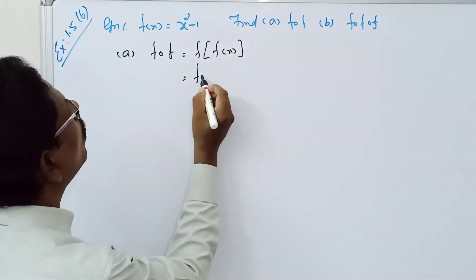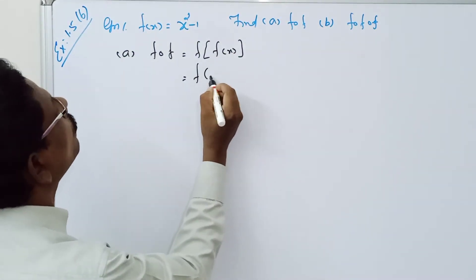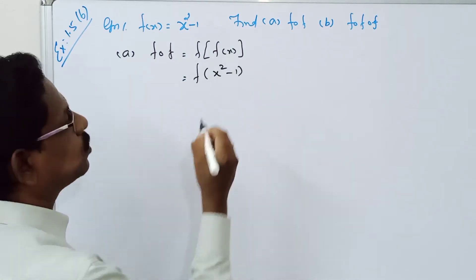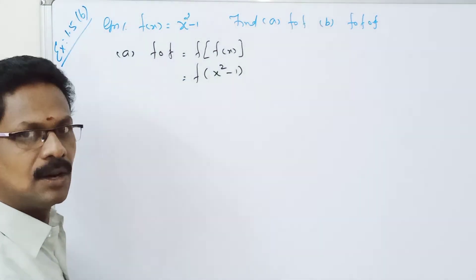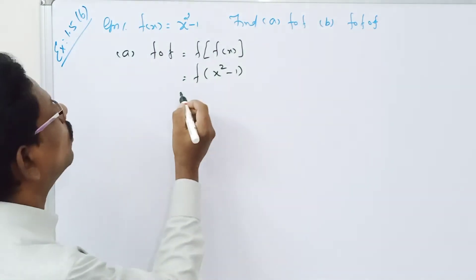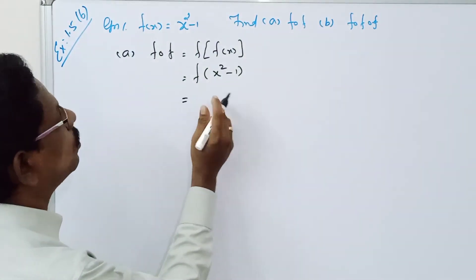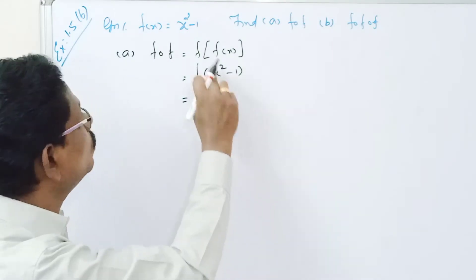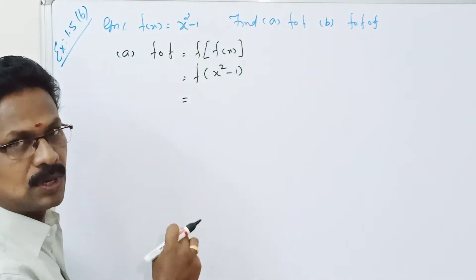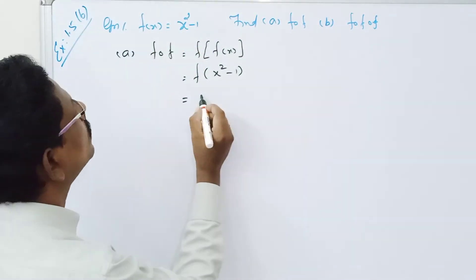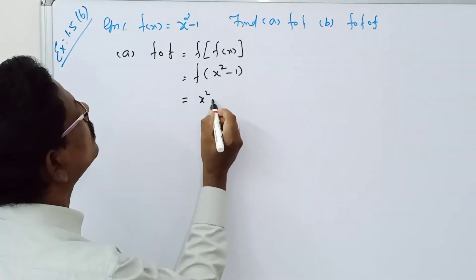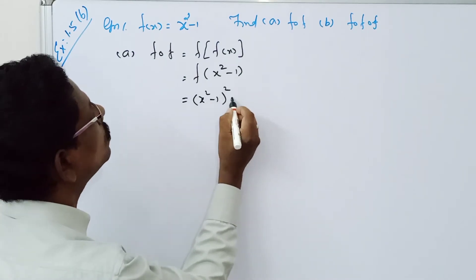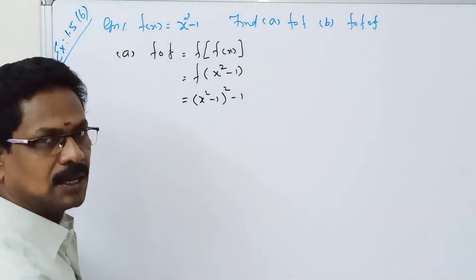Now, f of — what is f of x? It is x squared minus 1. So substituting, the value of f of x gives us f of x squared minus 1, which is x squared minus 1, the whole square minus 1.